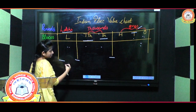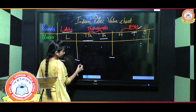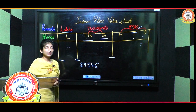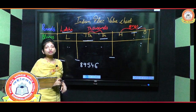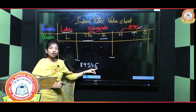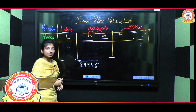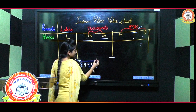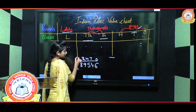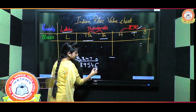Now I will explain how to enter a number in the Indian place value chart. If the number is 8, 9, 5, 4, 6 — how will we put it in the chart? First of all, do not start from left to right. Always start from right to left. On the right side: ones, tens, hundred, thousand, ten thousand.